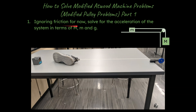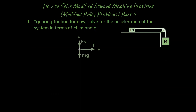The first problem says: ignoring friction for now, solve for the acceleration of the system in terms of m, big M, little m, and g. The hanging mass is big M and the mass on the table is little m. I'm going to show you the problem without friction first, then show you how to deal with the problem with friction as well — both case scenarios. So let's do the easier one first.